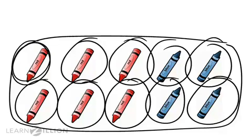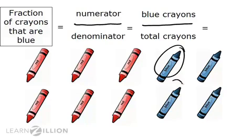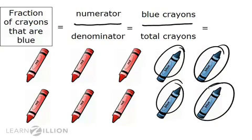Each crayon in the set is not exactly the same. There are some red crayons and some blue crayons. I want to know what fraction of the set of crayons is blue. To do this, I would write the part that I am thinking about over the total number of parts. I am only thinking about blue crayons. Remember that each crayon is one-tenth of the whole. So if we count just the blue crayons: one-tenth, two-tenths, three-tenths, and four-tenths.